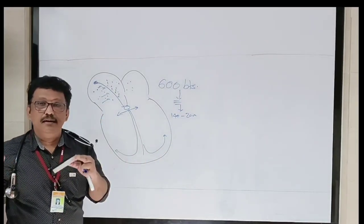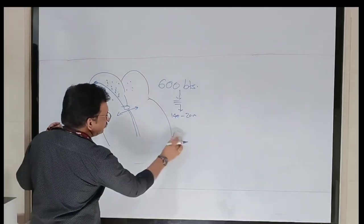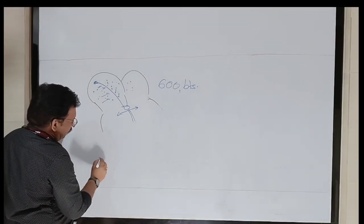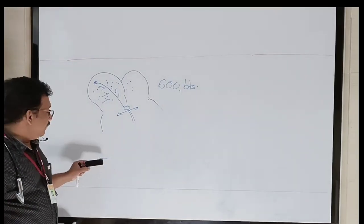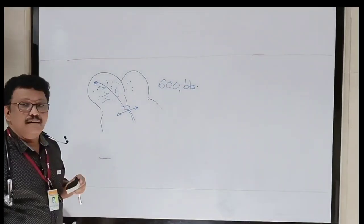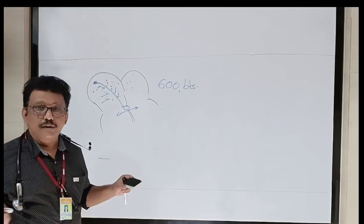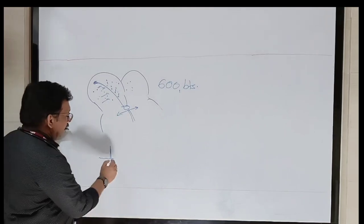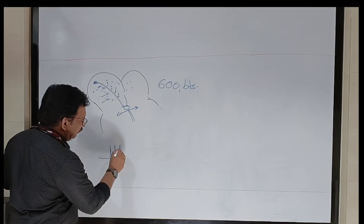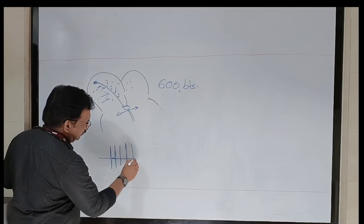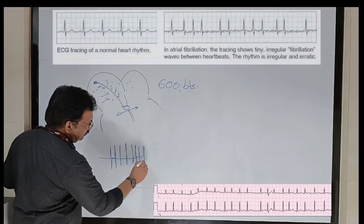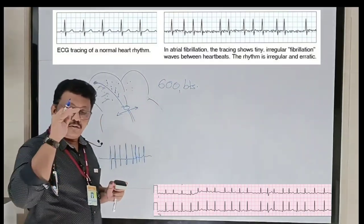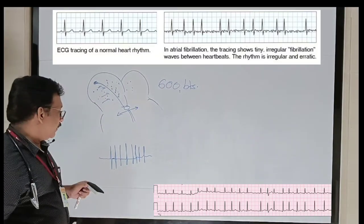We will now see the ECG pattern of atrial fibrillation. There is a wavy baseline — a large number of fibrillating waves in the baseline. These are all P waves but you never see a normal dome-shaped P wave. Then ventricular complexes come in between the wavy baseline. The baseline is wavy because the atrium contracts at around 600 beats per minute, and of those 600, only around 140 to 160 beats cross to the ventricle.